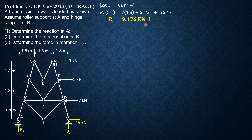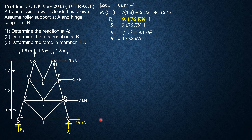Solving gives RA = 9.176 kilonewtons upward. BY is also 9.176 kilonewtons downward. The magnitude of RB is the square root of 15 squared plus 9.176 squared = 17.58 kilonewtons. The angle theta B = arctan of 9.176 over 15 = 31.46 degrees. Therefore the total reaction at B is 17.58 kilonewtons directed down to the right at 31.46 degrees to the horizontal.